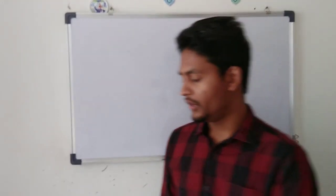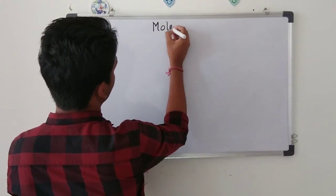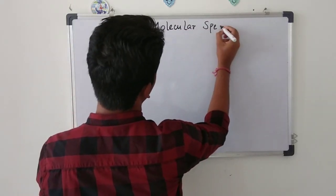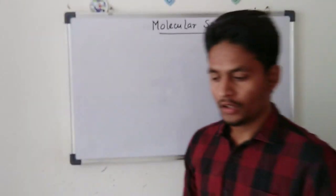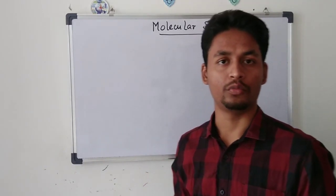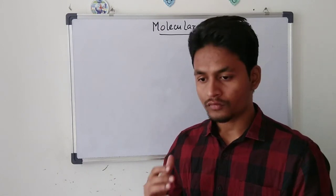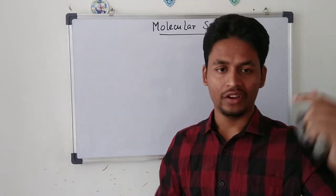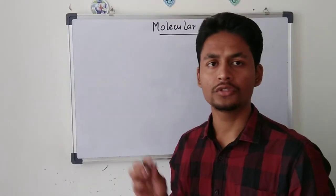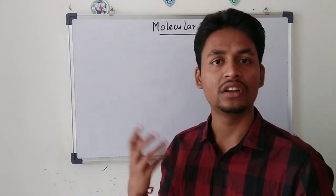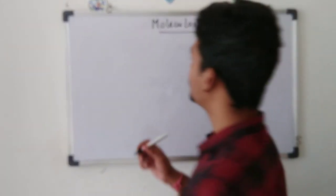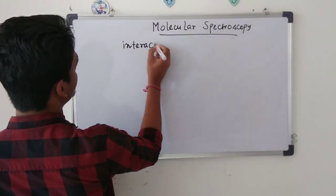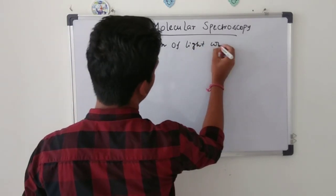I will cover all of molecular spectroscopy related to physical chemistry. Before going into molecular spectroscopy, you should know what spectroscopy is. Spectroscopy is the interaction of light with a substance. If that substance is an atom, it is called atomic spectroscopy; if the substance is a molecule, it is called molecular spectroscopy.